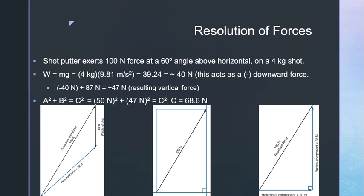What if the external forces are not collinear and do not act in a vertical or horizontal direction? Consider the forces acting on a shot during the putting action. At the instant shown, the athlete exerts a 100 Newton force on the shot at an angle of 60 degrees above horizontal. The mass of the shot is 4 kilograms. Using W = mg: 4 kg × 9.81 m/s² = 39.24 Newtons.